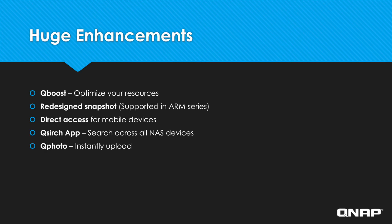QBoost optimizes your resources to keep your system running as smoothly as possible. With the redesigned snapshot, now ARM processor models can run snapshot as well. QTS 4.3.4 will also support direct access to backup files on your phone to your NAS through USB. The search app, QSearch, will now have the ability to search for files across all of your NAS devices. And QPhoto lets you upload photos and videos directly to your NAS.